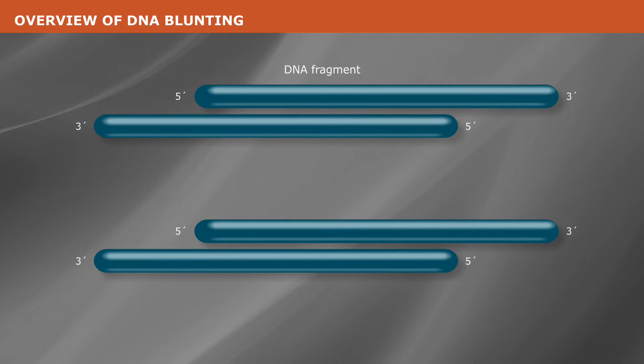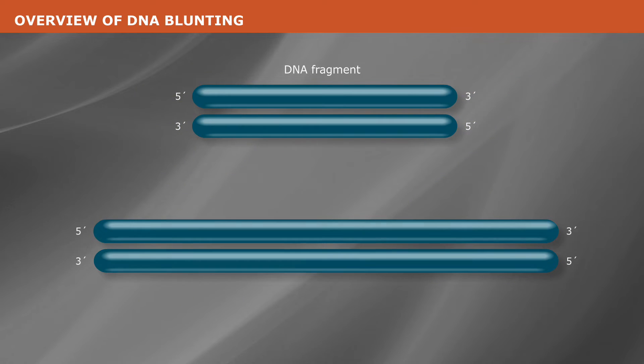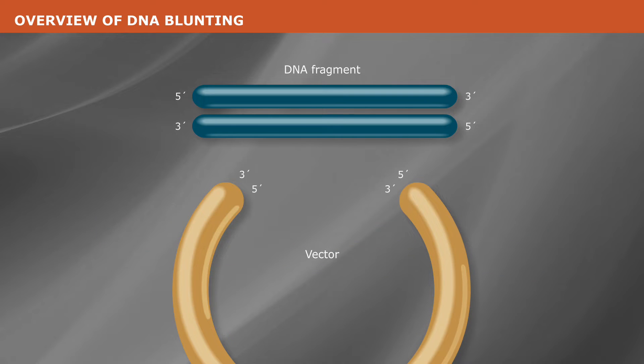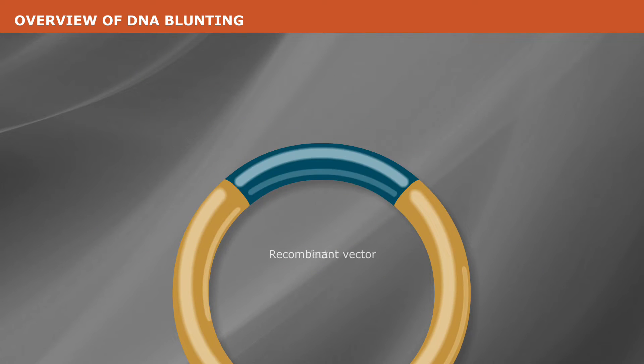Blunting a fragment of DNA involves the removal or fill-in of any unpaired, overhanging bases. This process is often used to prepare fragments for ligation with other blunt-ended DNA, or fragments with non-compatible ends.